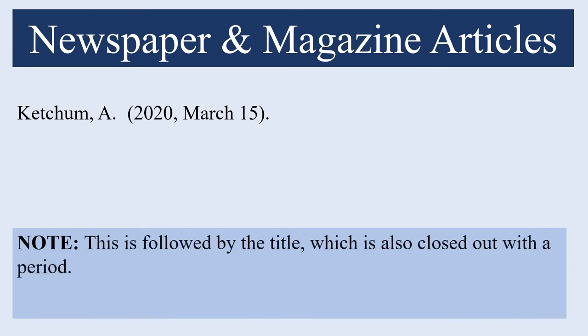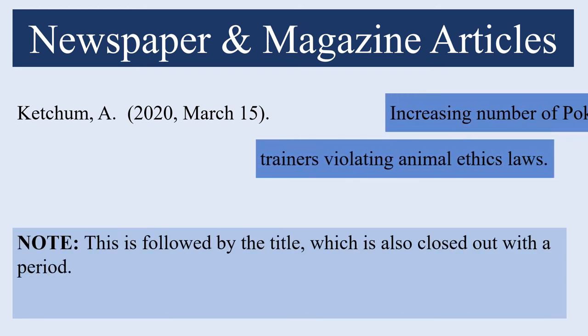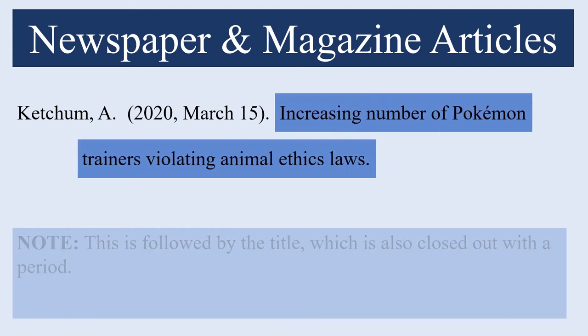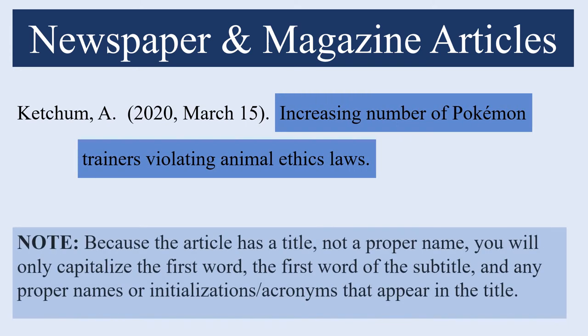The date of publication will be followed by the article title, which is also closed out with a period. Because the article has a title and not a proper name, you will not use proper name capitalization. Instead you will only capitalize the first word, the first word of the subtitle, and any proper names, initializations, or acronyms that appear in the title.